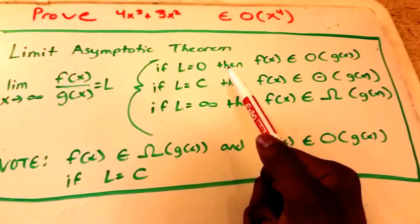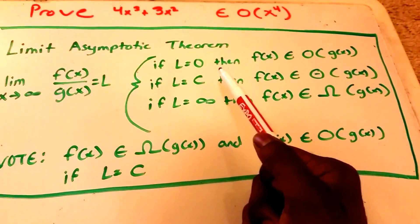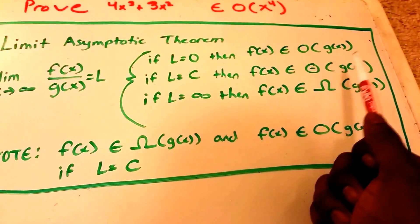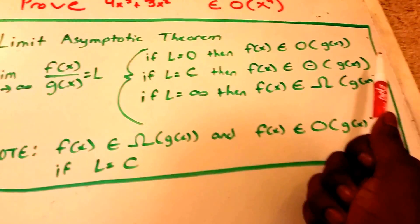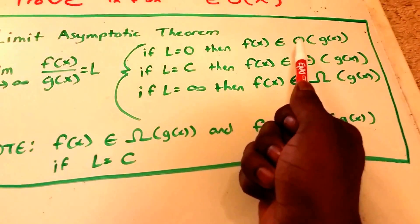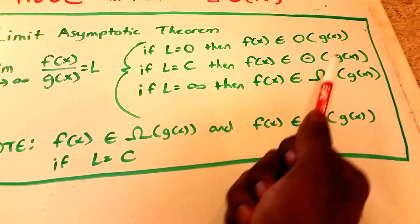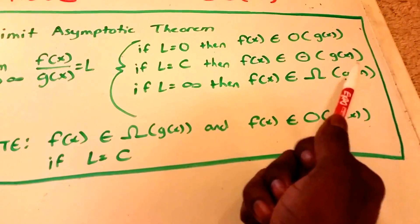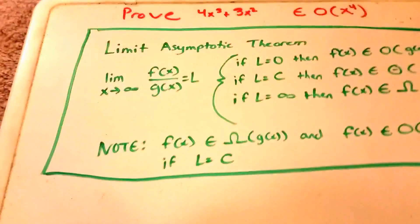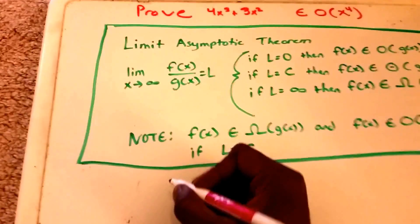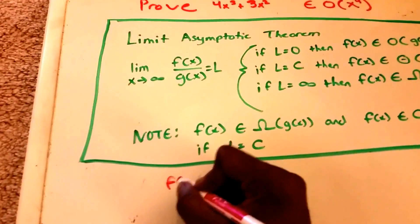Take note that if the limit is equal to a constant, it equals Big Theta of g(x), which also means that it belongs to both Big O of g(x) and Omega of g(x). So let's start.